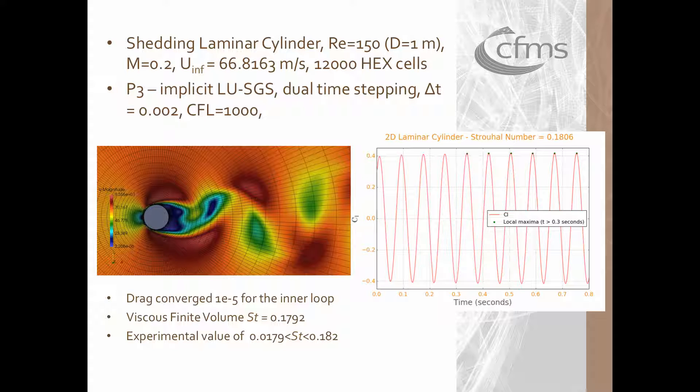The plot on the right hand side shows the history of the lift coefficient highlighting the laminar shedding. In order to capture convergence was established to be 10 to the minus 5 for the pseudo time cycles before marching in time. It can also be seen that the Strouhal number was predicted quite well and in agreement with the experiment.